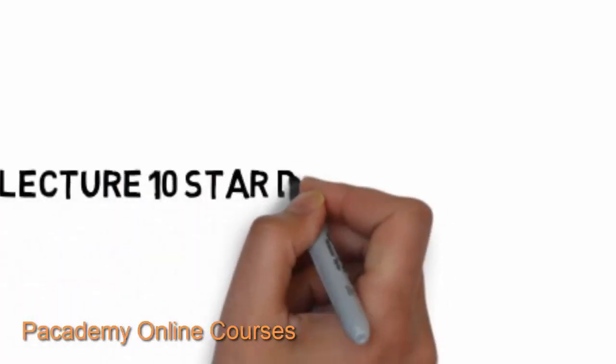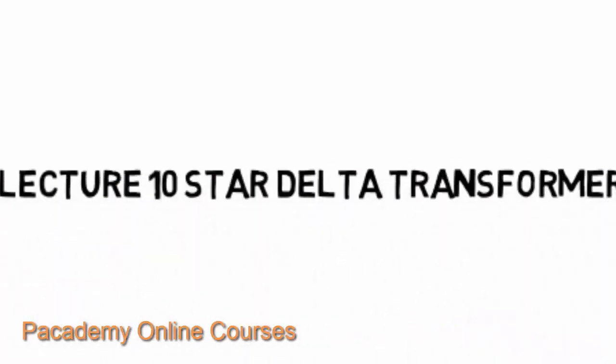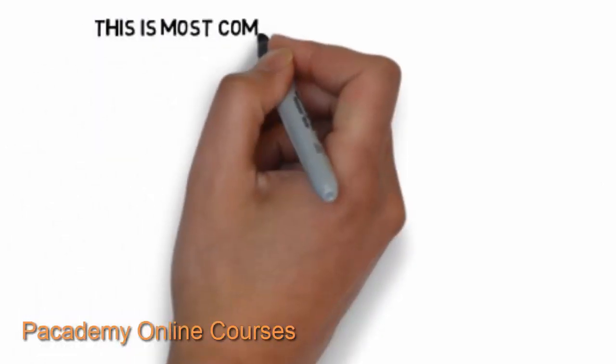This is lecture 10 in learning about transformers, and this is about the star-delta connection of transformers. Previously, we saw the three-phase transformer and the different types of connection possible for the transformer.